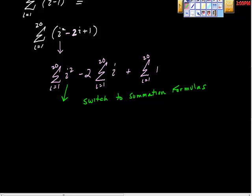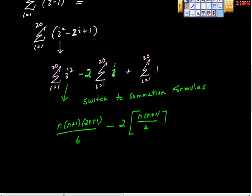Now I took this piece out and got n times n plus 1 times the quantity 2n plus 1 all over 6, minus 2. And I know the formula for i, which is n times the quantity n plus 1 all over 2, and I know the formula for this, and it's just cn. So 20 times 1 is 20. I should have said plus cn.